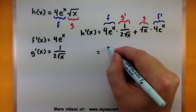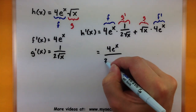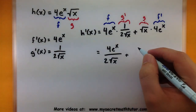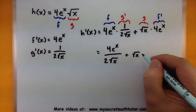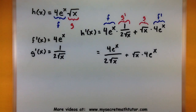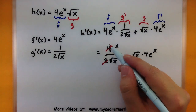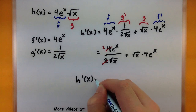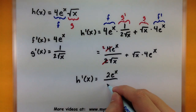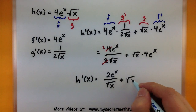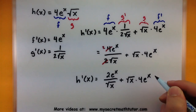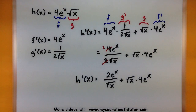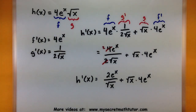We simplify just a little bit: 4e to the x all over 2 square root of x, plus square root of x times 4e to the x. We can cancel out the extra 2, so h prime of x is equal to 2e to the x all over the square root of x, plus square root of x multiplied by 4e to the x. We've now found our derivative using the product rule — a really handy thing. Remember to only use it on functions that are being multiplied, and be very careful about where you put those pieces. Please visit MySecretMathTutor.com for more videos.